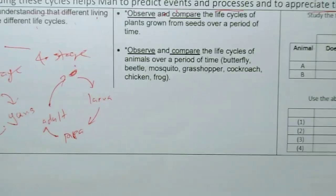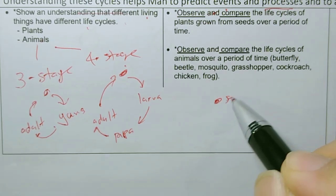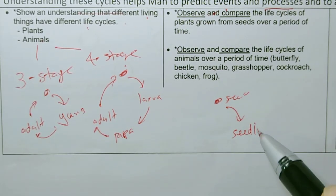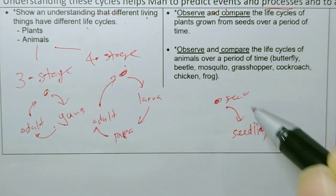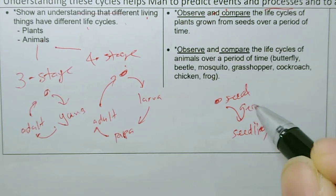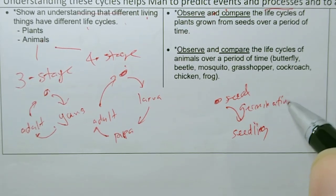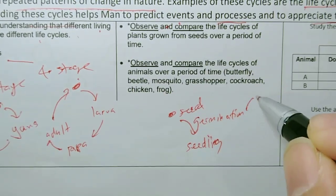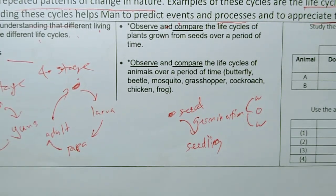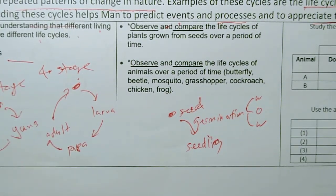For plants the life cycle is quite simple. It's just a seed will grow into a seedling or young. This process where seed turns into seedling is called germination. Germination requires conditions like warmth, oxygen, and water. Is light needed for germination? No, light is not needed.